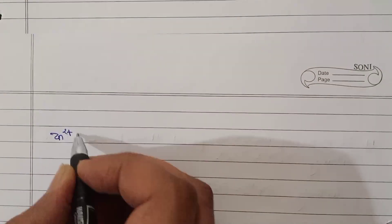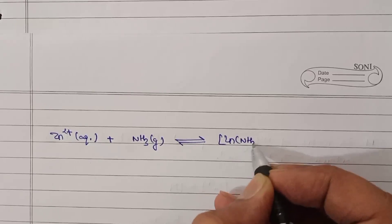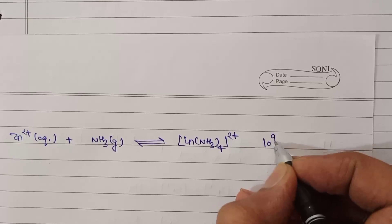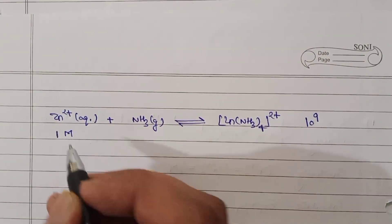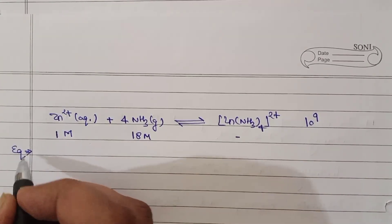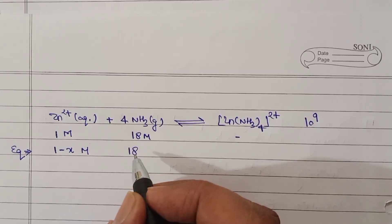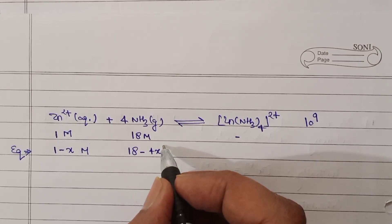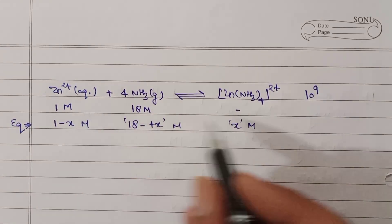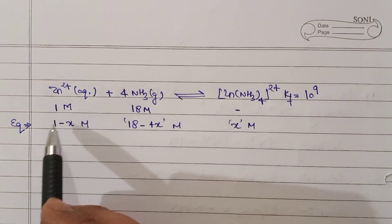Zn²⁺ in aqueous solution will form a complex with ammonia: Zn(NH₃)₄²⁺, with formation constant Kf = 10⁹. Initially, the concentration of Zn²⁺ is 1 molar and ammonia is 18 molar. At equilibrium, let X molar of Zn²⁺ be consumed, so Zn²⁺ remaining is 1−X, ammonia consumed is 18−4X, and X molar of complex forms. Since the formation constant is very large, Zn²⁺ is nearly completely consumed.